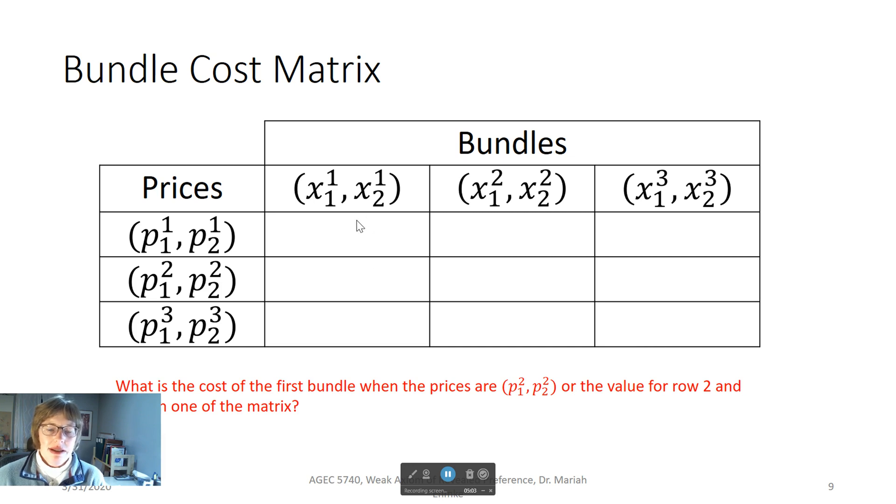This would be what did the consumer spend when they bought the first set of bundle choices at the first set of price for that choice. Then you can also think about alternatives. What if they wanted to buy their second choice bundle at the first choice prices? What would those look like? I want you to take a minute and think about that.